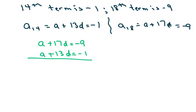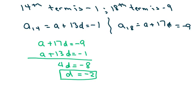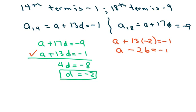I'm going to subtract to eliminate the a. I get 4d equals negative 8. So d equals negative 2. Now to find a, I'm going to plug back into one of these — I'll plug it into the second one. So I get a plus 13 times negative 2 equals negative 1. So a minus 26 equals negative 1.